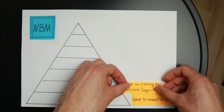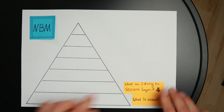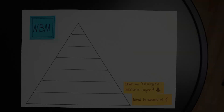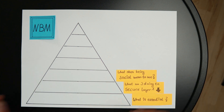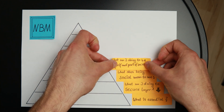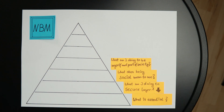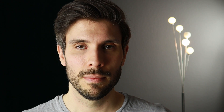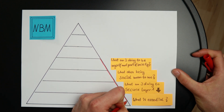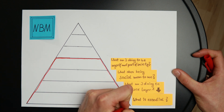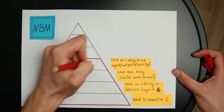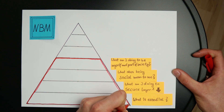For layer three — what does being social mean to me? For layer four, and that's a quite tricky one — what am I doing to be myself, and what am I doing to be an accepted part of society? For the lower four layers it's really important to keep them as lean as possible. Maslow designed them as deficit needs, so if something is missing there your life will get worse.